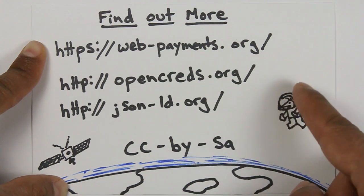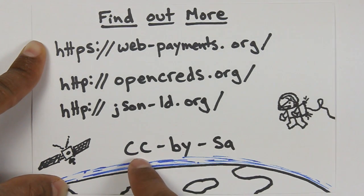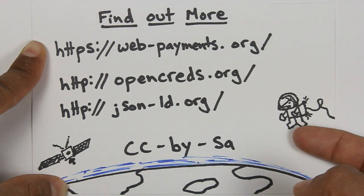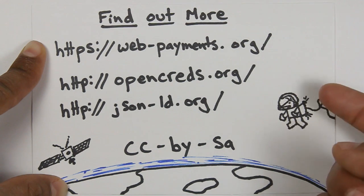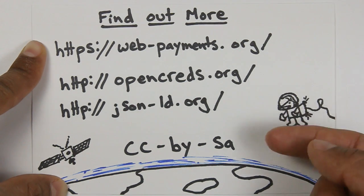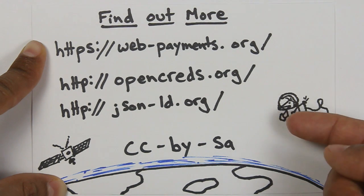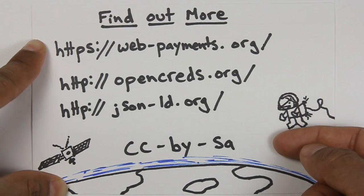This entire presentation is released under a Creative Commons Attribution Share-Alike License, which basically means that you can share this with anyone that you'd like without asking for permission. So please share this with your fellow developers and tell them about this amazing new technology that we hope is going to make the web far more trustworthy than it is today.